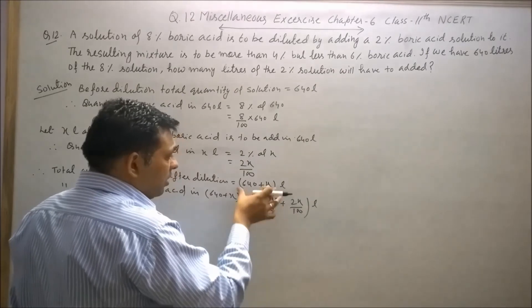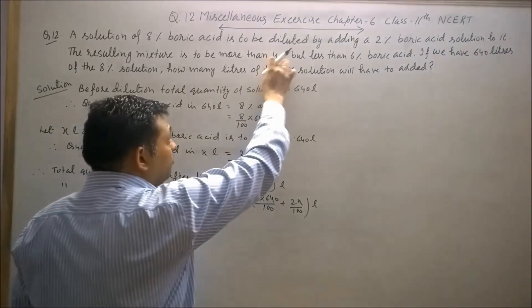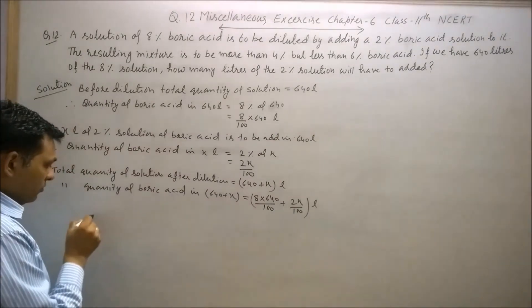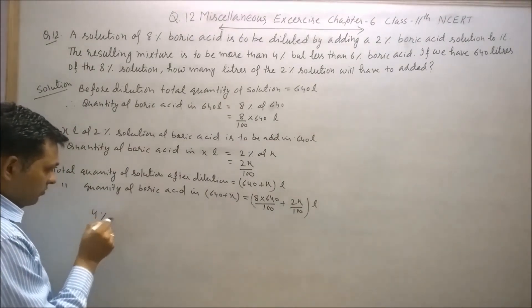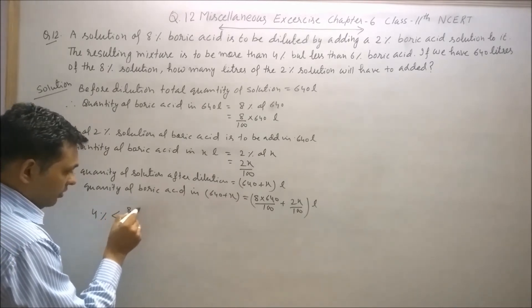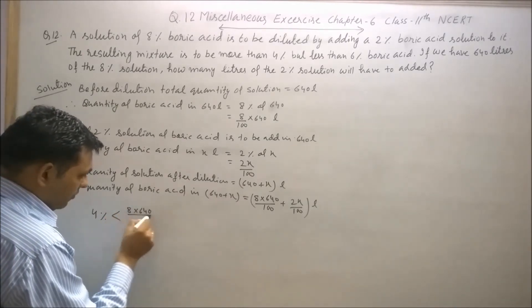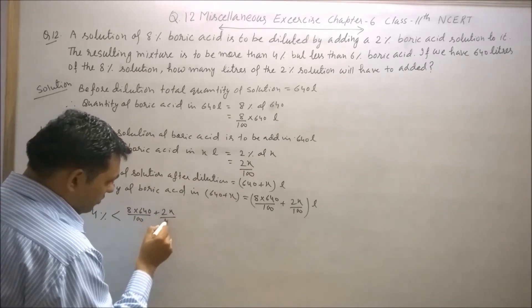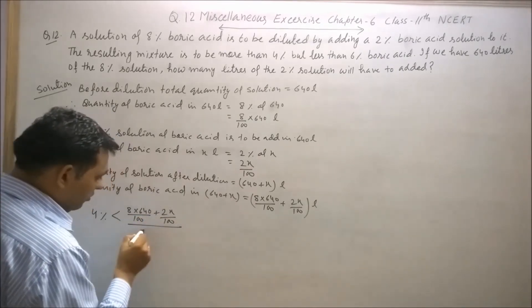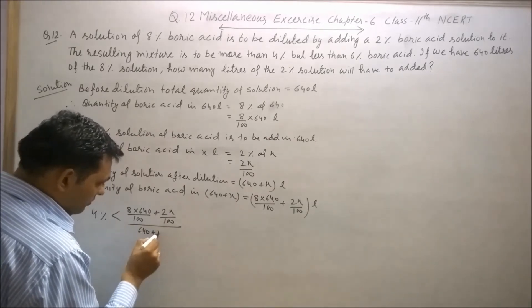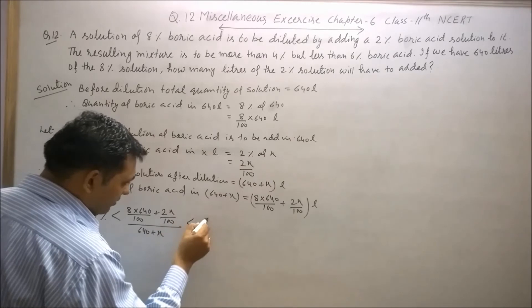The total quantity of solution is 640. This quantity will lie between 4% and 6%. Therefore, 4% is less than [8×640/100 + 2x/100] divided by [640 + x], which is less than 6%.